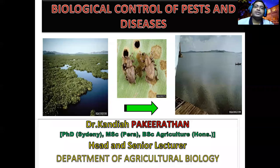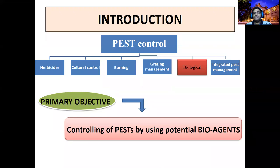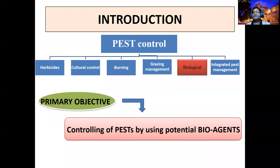Good morning, dear students. Today in plant protection class we are going to study the biological control of pests and diseases. Pest control can be done using several tactics studied in integrated pest management. One of such tactics is biological control, where the primary objective is controlling pests by using living organisms.